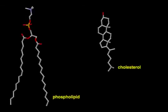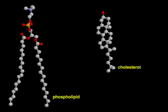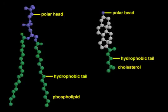Cholesterol is another lipid component of most cell membranes. It has a hydroxyl group — a tiny polar head group, so to speak — attached to a rigid hydrophobic tail. Cholesterol can fill gaps between phospholipids and thus stabilizes the bilayer.